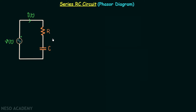This is our series RC circuit. The resistor and capacitor are connected in series and they have the same current IT through them. The voltage across the resistor is VR and the voltage across the capacitor is VC.